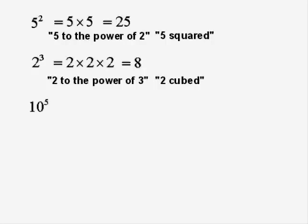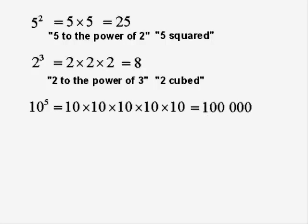10 to the power of 5 — that's 5 tens all multiplied. So its value is 100,000, but we would call that 10 to the power of 5, sometimes just 10 to the 5, or 10 to the 5th.